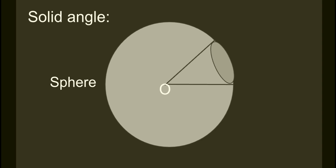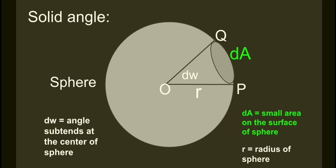This is a sphere having center O. We got a small part PQ of area dA on the surface of a sphere. So dA is the small area on the surface of a sphere, and r is the radius of the sphere, which sustains angle dω at the center of the sphere called solid angle.